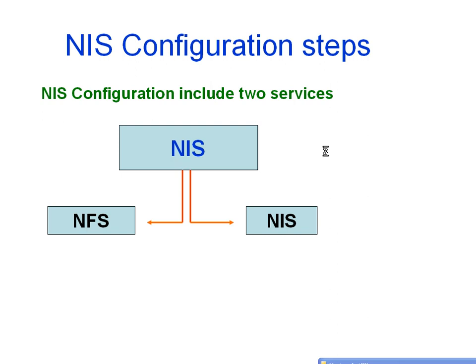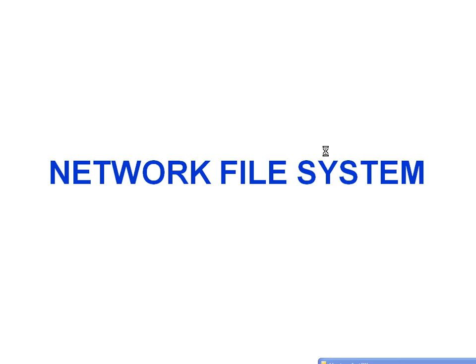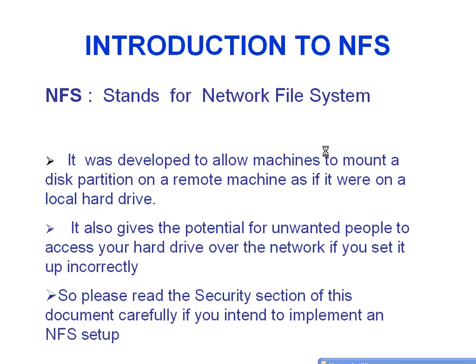Now let us discuss about NIS configuration steps. The NIS configuration includes two services: first is NFS and second is NIS. NFS stands for network file system. NFS was developed to allow machines to mount a disk partition on a remote machine as if it were on a local hard drive — that is for location transparency.